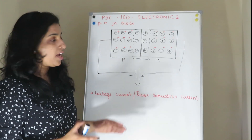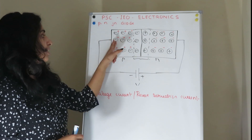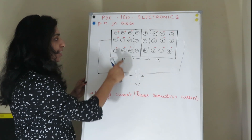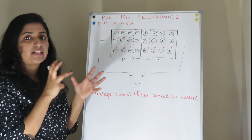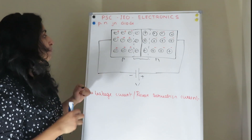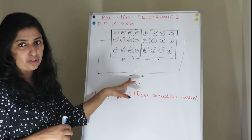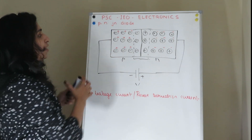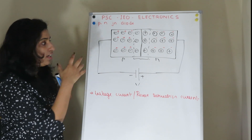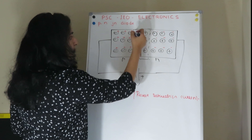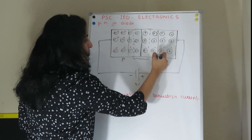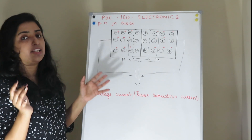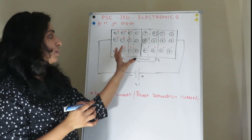In reverse biasing, the negative terminal of the battery is connected to the P-type and the positive terminal is connected to the N-type. The majority carriers are positive, and the holes in P-type get attracted to the negative terminal of the battery. Similarly, the electrons in N-type get attracted to the positive terminal of the battery. This inner attraction widens the depletion region, and the potential barrier increases.